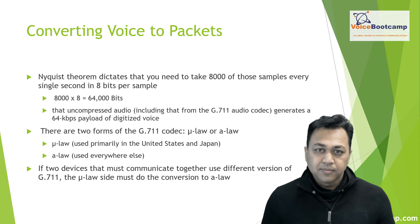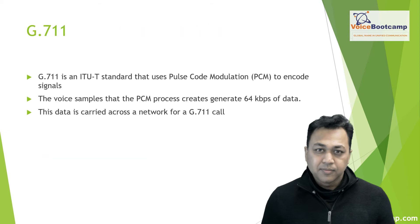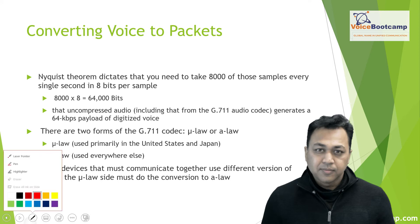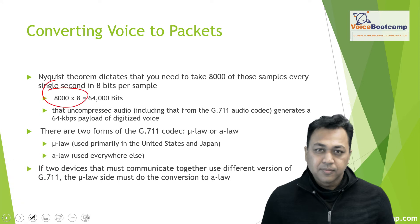In order to get one second of a sample of your voice, you need to take 8,000 samples every second. You take 8,000 and multiply that by 8 bits, because you have 8 bits per sample, which yields 64,000 bits — that is your G.711 uncompressed traffic. There are two forms of G.711: Mu-law, which is used in North America, Canada, the US, and Japan, and A-law, which is used pretty much worldwide.